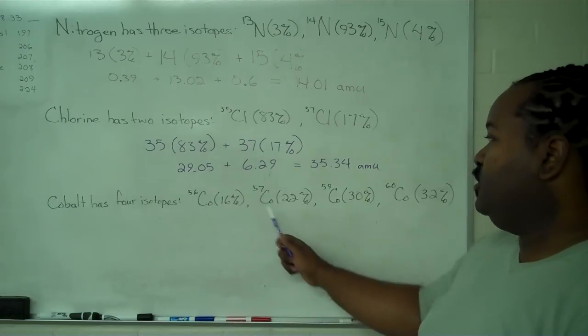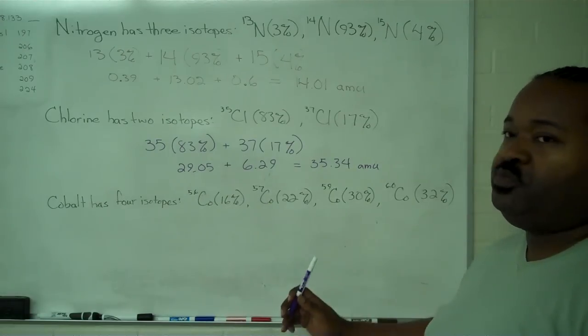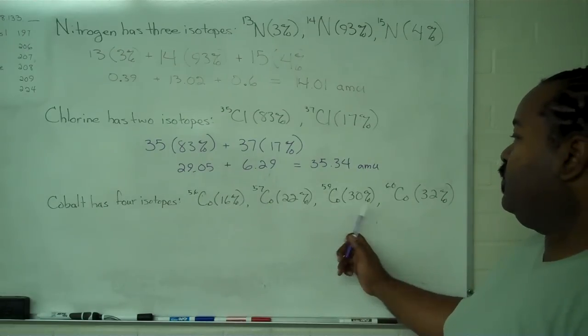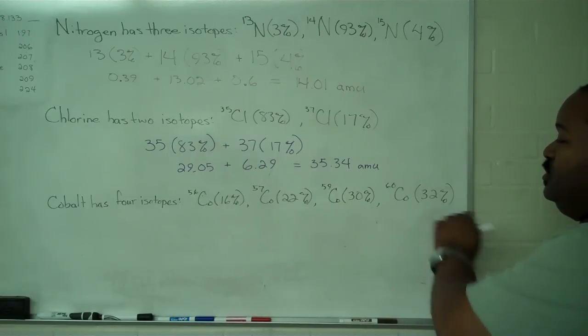Cobalt 56, 16%. Cobalt 57, 22%. Cobalt 59, 30%. And cobalt 60 at 32%.